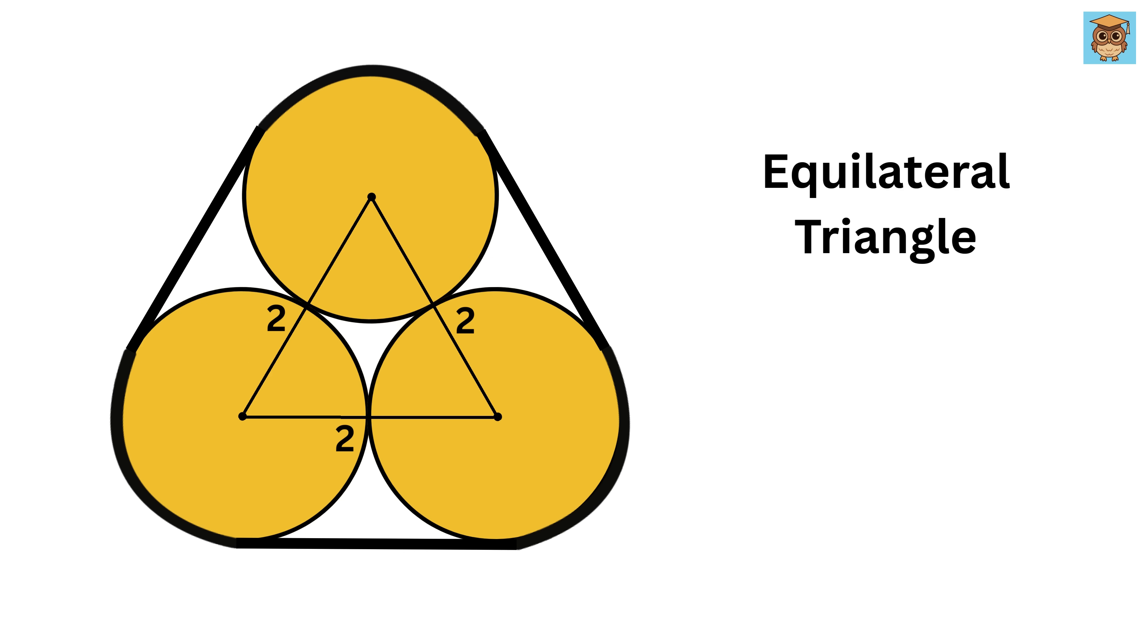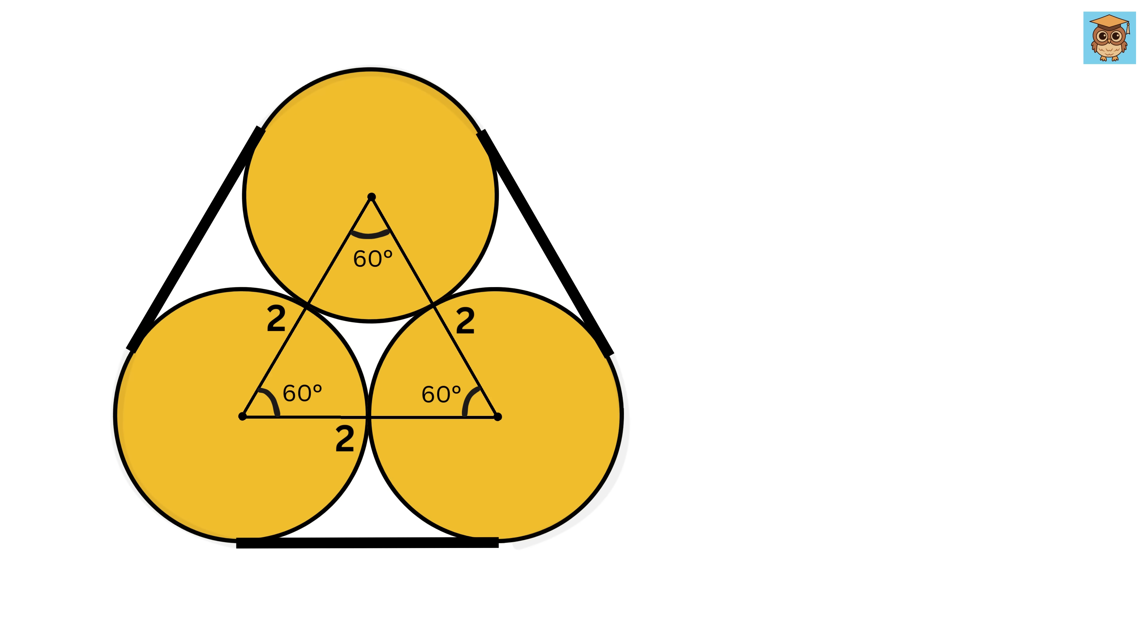That means the triangle is equilateral, which is just a fancy name for a triangle where all sides and all angles are equal. So in our case, each side is two and each angle is 60 degrees.